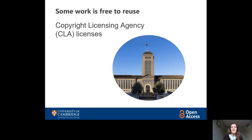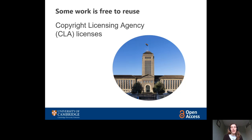Let's talk about licences briefly, because I will come back to licences later on in this module. Let me mention the Copyright Licensing Agency licence, which the library holds. This is negotiated by a collective in the UK, and it means that we have the right to reuse certain types of work for teaching and study purposes. Ask your librarians for advice — they know lots about these. It's, for example, the reason why in the library, by the photocopier, you'll see signs that tell you how much you can photocopy — one chapter or 10% of a book — because that's what's permitted within the CLA licence.